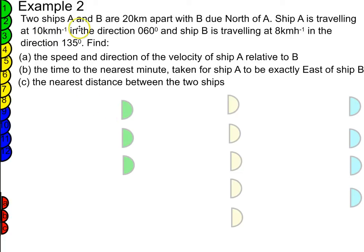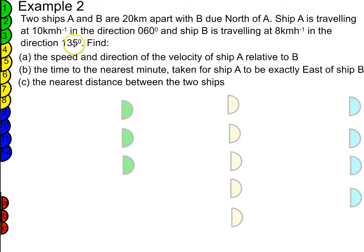We've got two ships, A and B, that are 20 kilometres apart, with B due north of A. Ship A is travelling at 10 kilometres per hour in the direction of 60 degrees, and ship B is travelling at 8 kilometres per hour in the direction of 135 degrees. So these are bearings. We need to first of all find the speed and direction of the velocity of ship A relative to B.